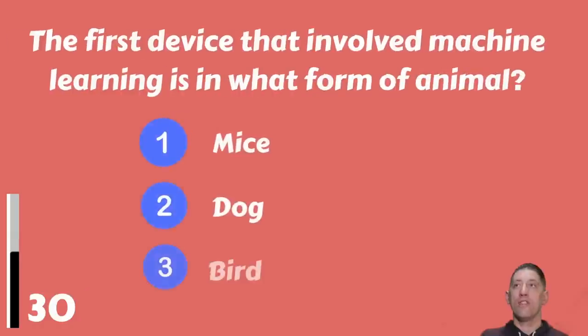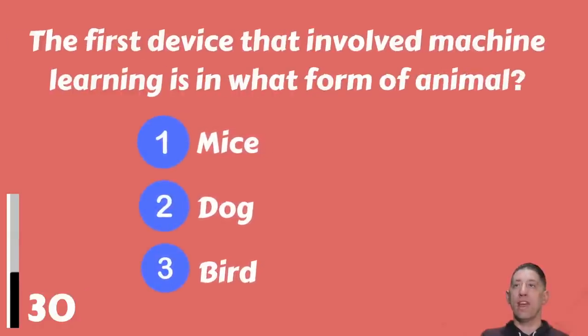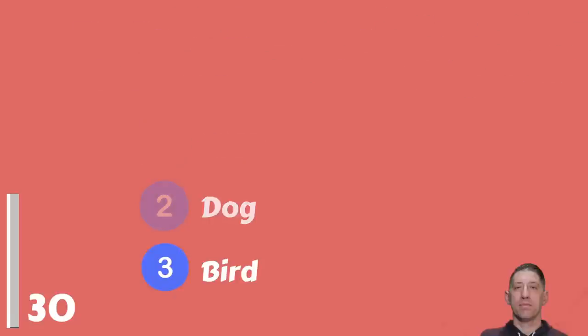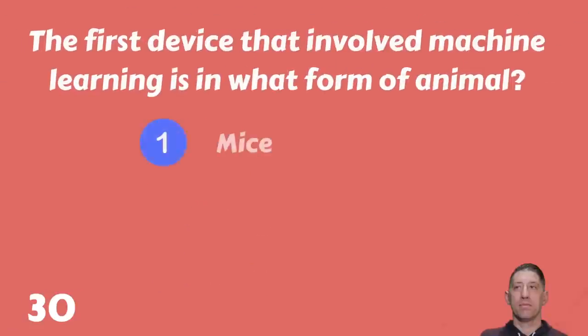The first device that involves machine learning — what form of animal was it? Mice, dog, or bird? The answer is mice.